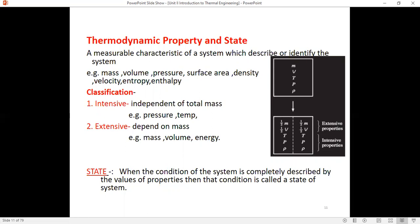Understanding this makes it easy to move forward. Basically, a measurable characteristic of a system which describes or identifies the system. For example, mass, volume, pressure, surface area, density, velocity, entropy, and enthalpy are called properties.